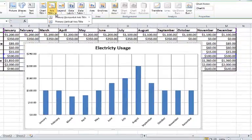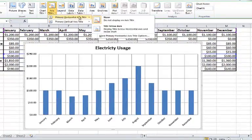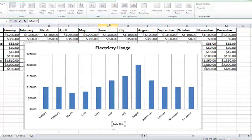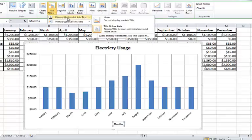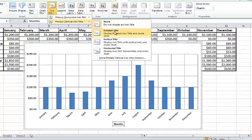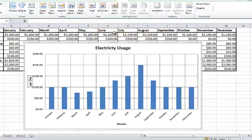Next, I'll select Axis Titles, Horizontal Title, and Title Below Axis. You can see this allows me to write the word Months. I can also do Axis Title, Vertical Title. And this allows me to type the word Cost.